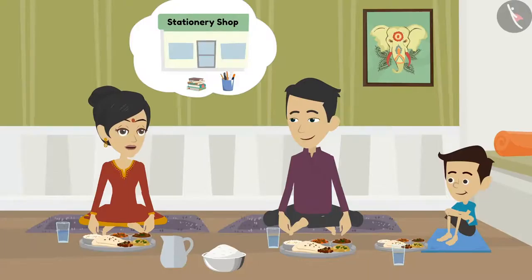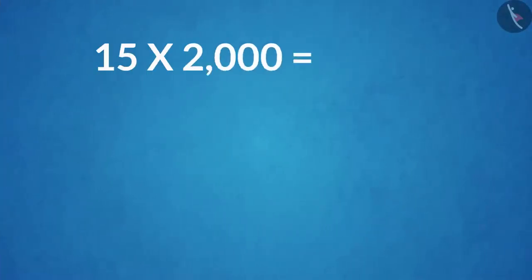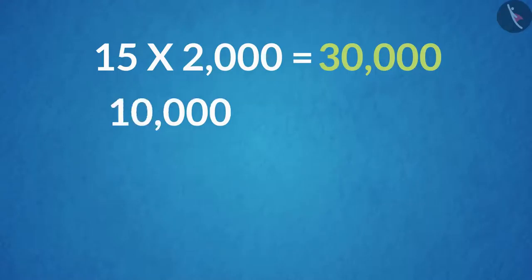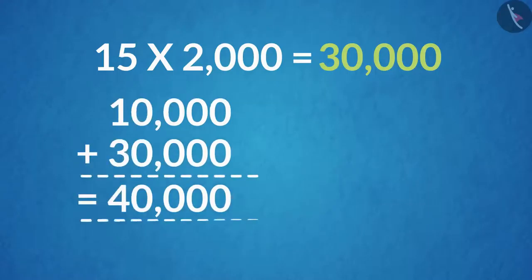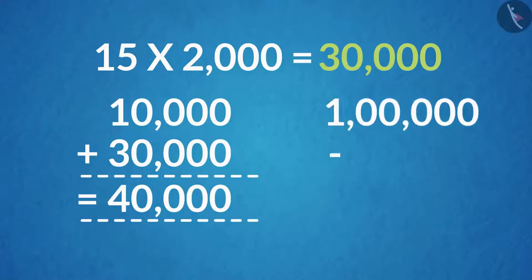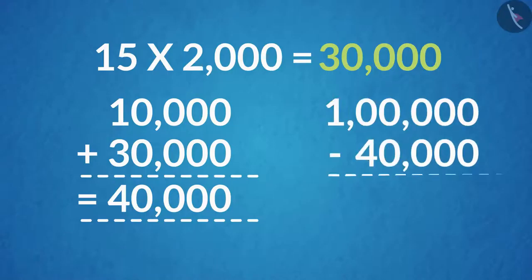How much do you think we have saved in total? Multiply 15 by 2,000. If we multiply 15 by 2,000, we get 30,000 rupees. That means we have a total of 10,000 plus 30,000, which is equal to 40,000 rupees. But I need 1 lakh rupees for this purpose.